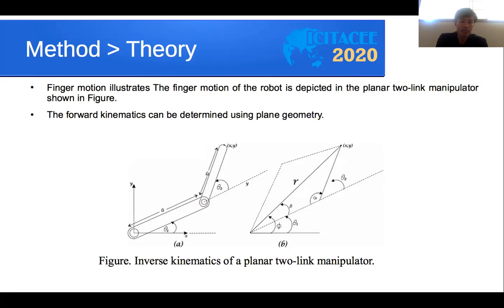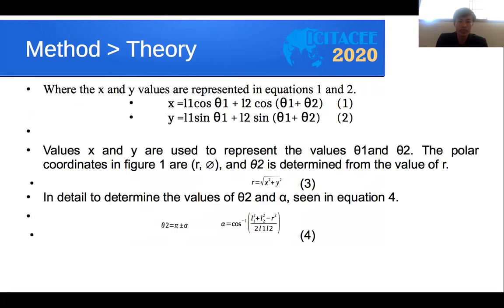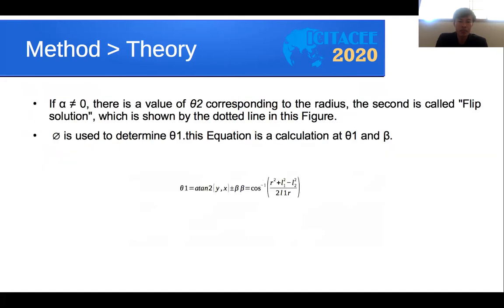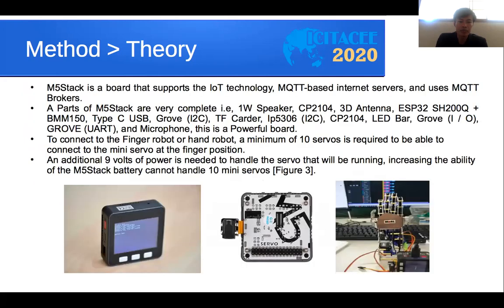This shows how to get the x and y values, and how to get alpha, theta, and beta values — the calculations needed for inverse kinematics. This covers the mathematical derivation for positioning the finger robot joints.